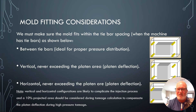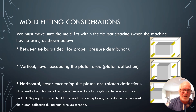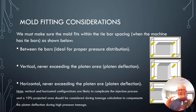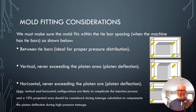Vertical and horizontal configurations can complicate the injection process, so a 10% projected area safety factor should be added during tonnage calculations to compensate for platen deflection under high pressure. If you don't include that safety factor, you may find a mold rated for a 550-ton press actually can't run in one.